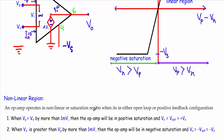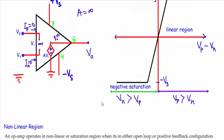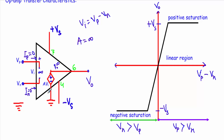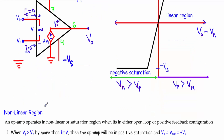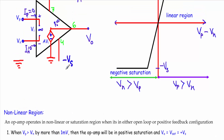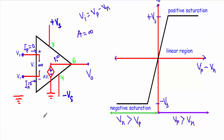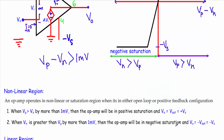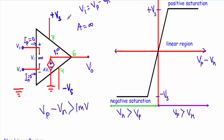An operational amplifier operates in the nonlinear or saturation region when it is in either open loop connection or in positive feedback configuration. If the non-inverting terminal voltage VP is greater than the inverting terminal voltage Vn by more than one millivolt — that is, if VP minus Vn is greater than one millivolt — then the operational amplifier will operate in the positive saturation region, and the output voltage will be equal to the positive saturation voltage.